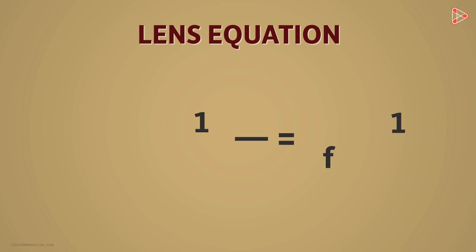Let me just write down this equation first. This is the lens equation: 1 over F is equal to 1 over V minus 1 over U.